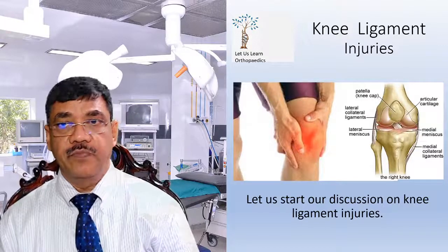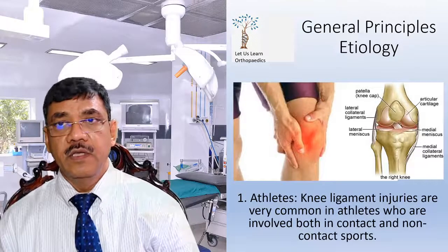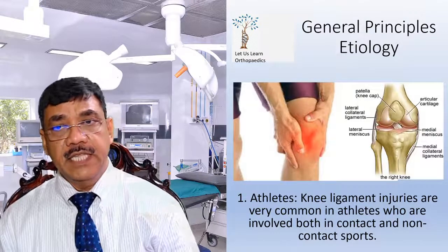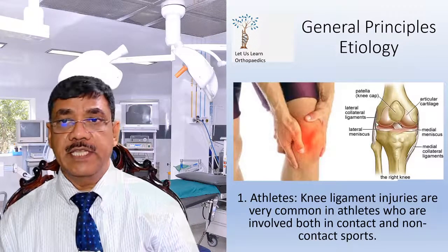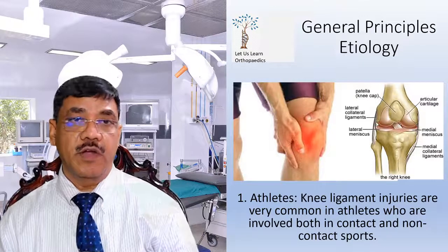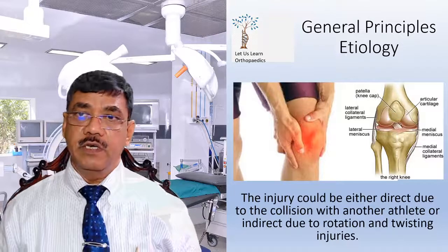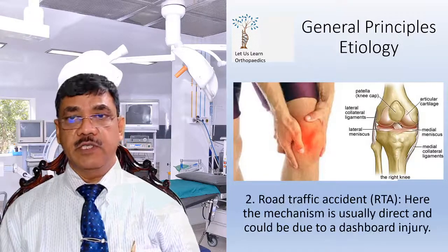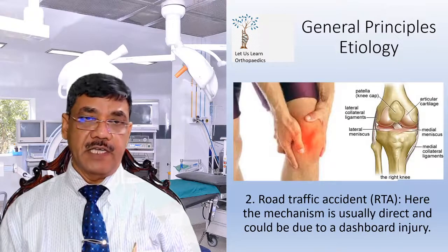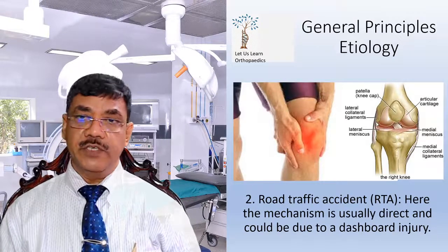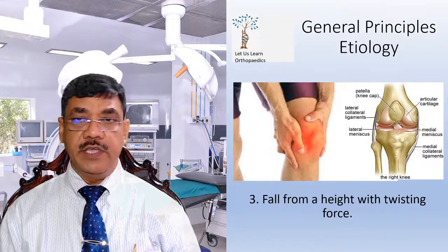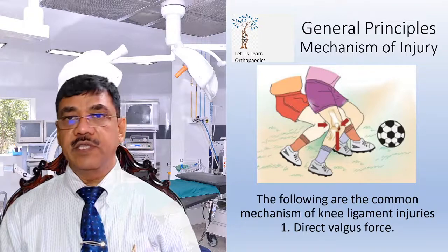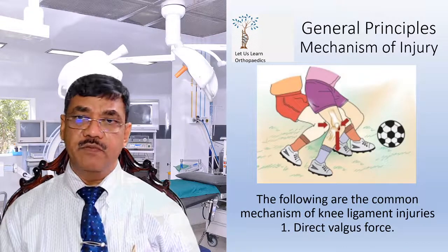Now let us start our discussion on knee ligament injuries. Looking at the etiology: first, athletes — knee ligament injuries are very common in athletes involved in both contact and non-contact sports. The injury could be either direct due to collision with another athlete, or indirect due to rotation and twisting injuries. Second, road traffic accidents, where the mechanism is usually direct and could be due to a dashboard injury. Third, falls from height with a twisting force. The following are the common mechanisms of knee ligament injuries as seen in the diagram.